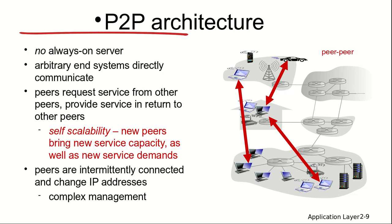Peer-to-peer is self-scalable — new peers add capacity to the system. For example, in BitTorrent, once you get a seed, multiple parties send information to you in parallel, and you also upload in return. The more peers online, the better the service capacity — it is directly proportional to the number of peers.